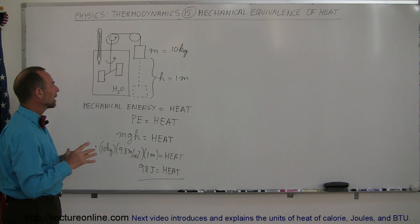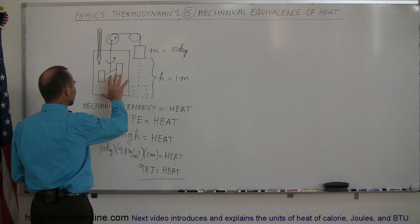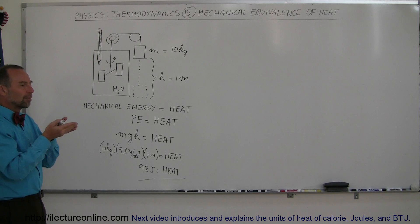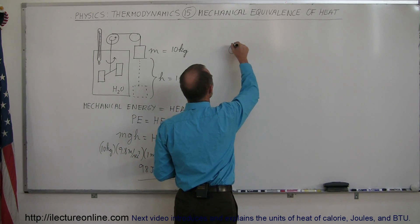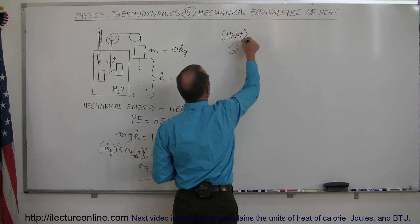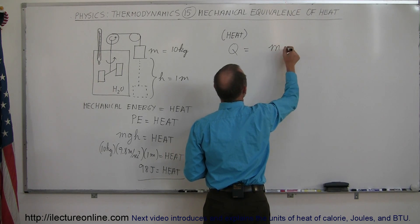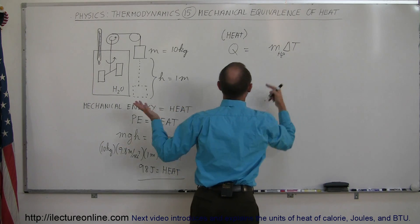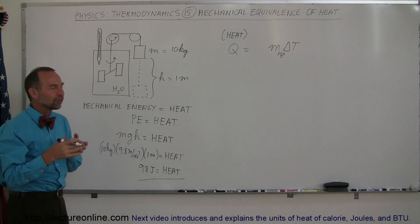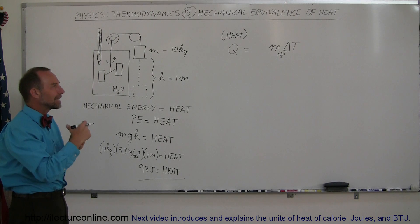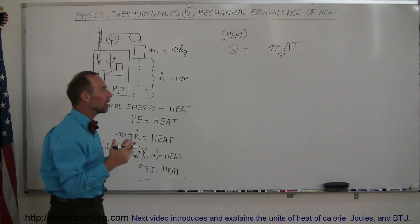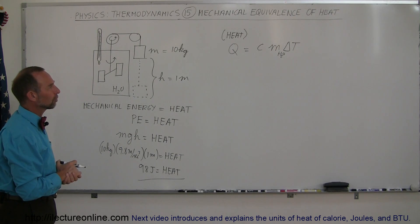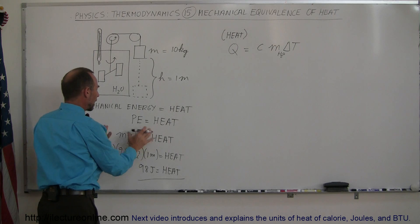They also needed a way to calculate the heat being added to the water. The amount of heat Q added to a substance equals some constant times the mass of the water times the change in temperature — Q = C × m(H₂O) × ΔT. They realized different substances absorb different amounts of heat for the same temperature change, so they called that constant C, the coefficient of heat for that material.